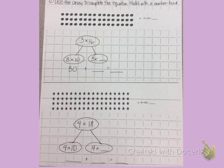Number 1. Use the array to complete the equation. Model with a number bond. So I am going to solve 3 times 16. 16 has been broken apart into 10 and another number.